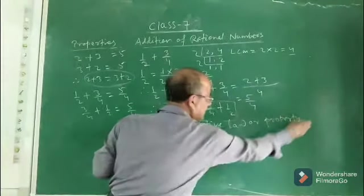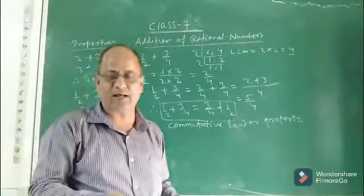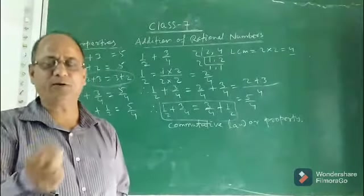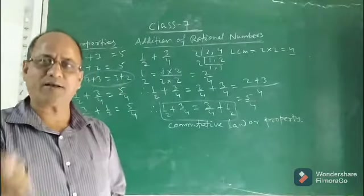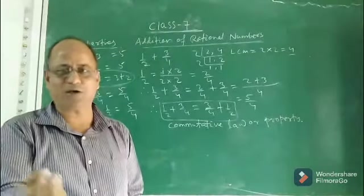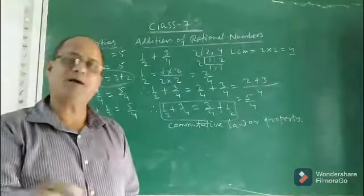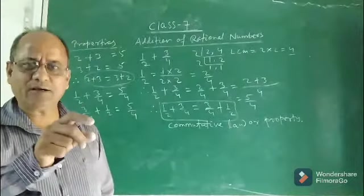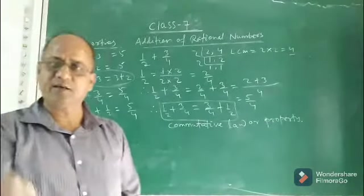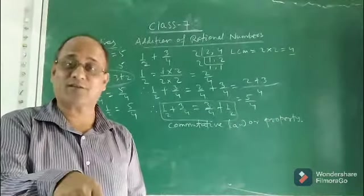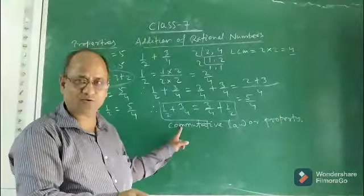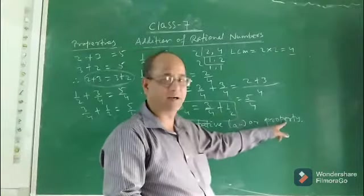Let me give you one example from day-to-day life to explain commutative law. Suppose your mother says: put on your shoe and socks. What will you do? First you will put on the socks and then the shoe. You can never put on the shoe first and then the socks. So putting on shoe and socks is not commutative in nature, because the order matters — you must put socks on before the shoe.